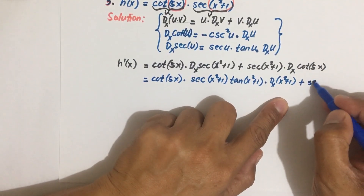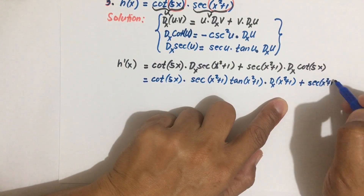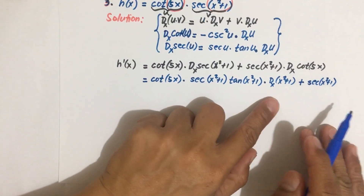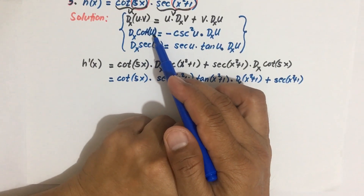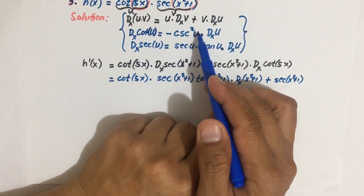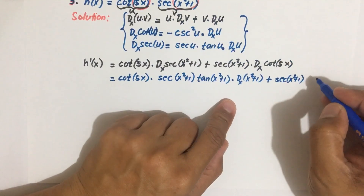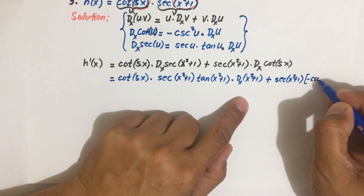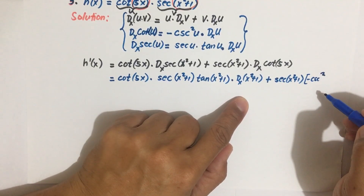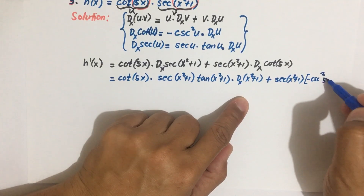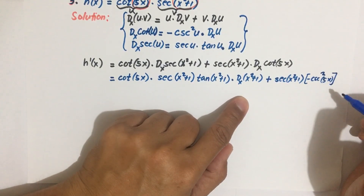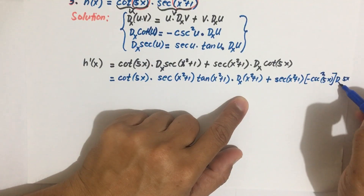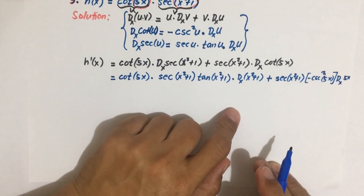For the second term, we have secant of (x squared plus 1) times the derivative of cotangent 5x. The derivative of cotangent u equals negative cosecant squared u times the derivative of u. Here u is 5x, so this becomes negative cosecant squared of 5x times the derivative of 5x with respect to x, which equals 5.